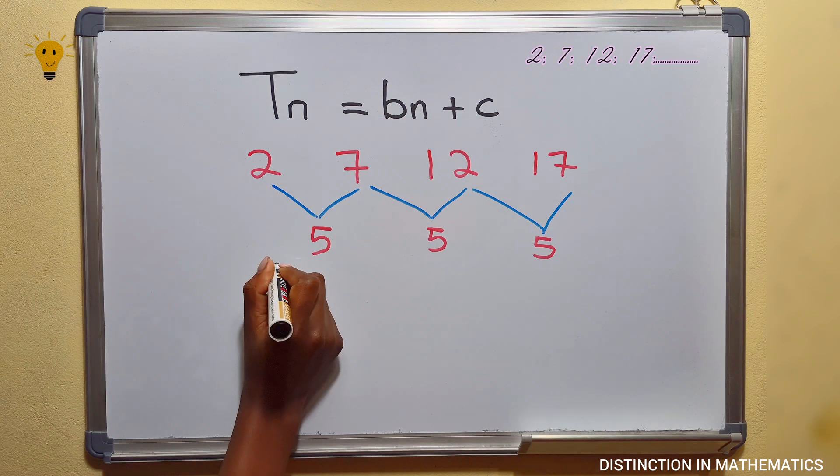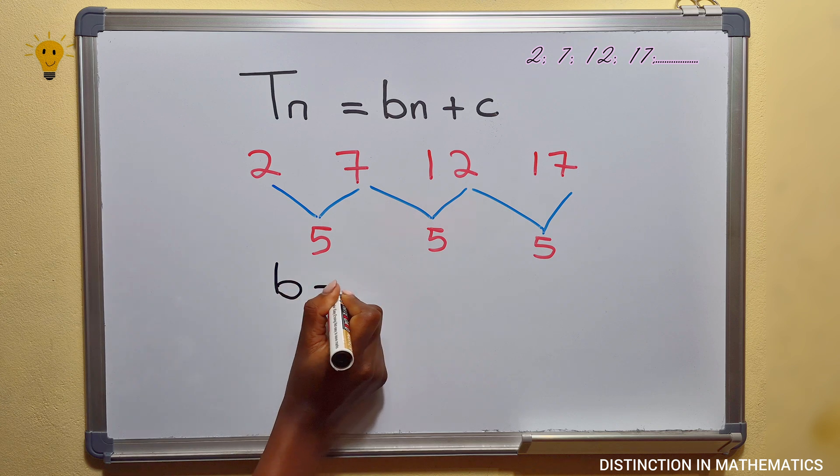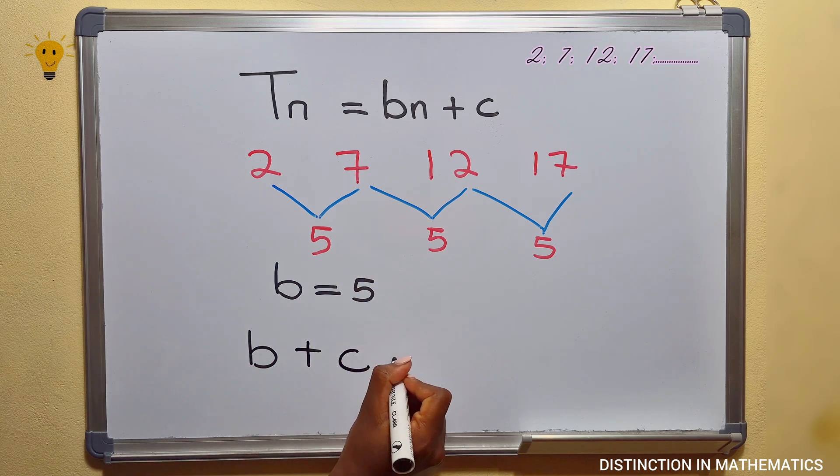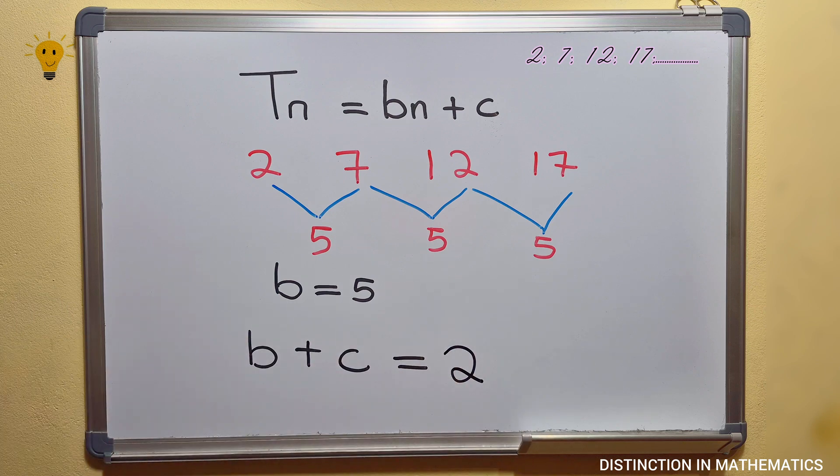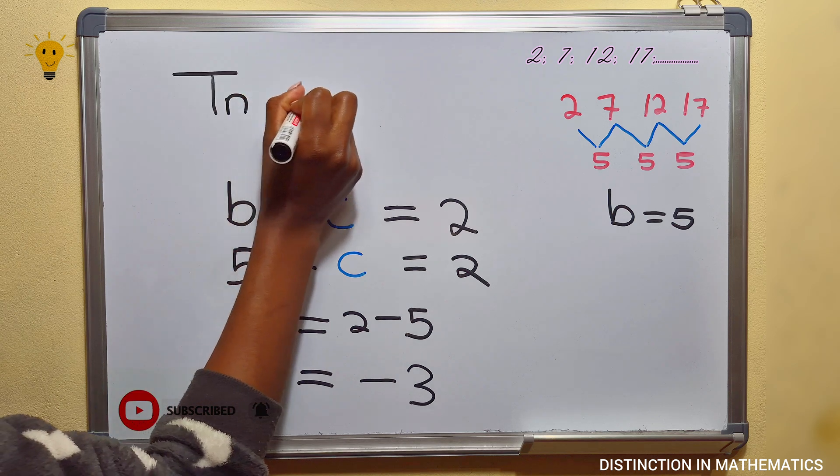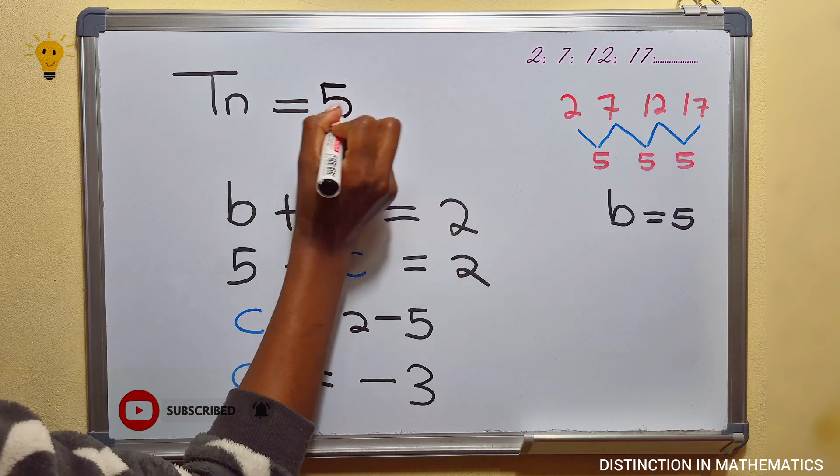The value of b is the difference between these numbers, which is 5. To find the value of c, you will use a simple formula: b plus c equals a, where a is the first number in your sequence. We substitute b with 5, and when we take 5 to the other side of the equal sign to solve for c, we get the value of minus 3. So the nth term for this sequence is Tn equals 5n minus 3.